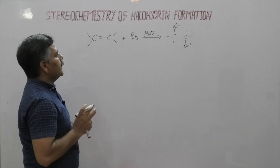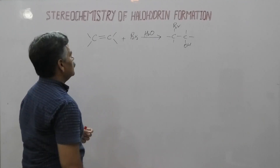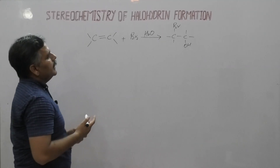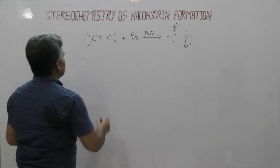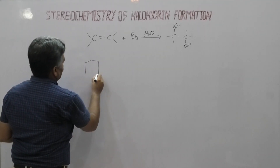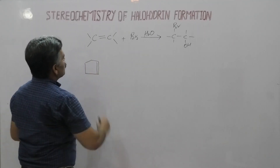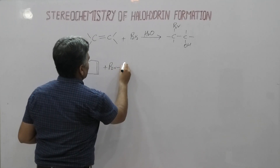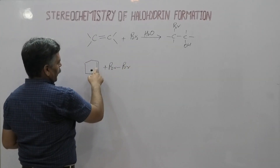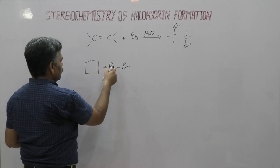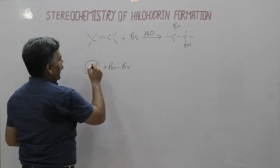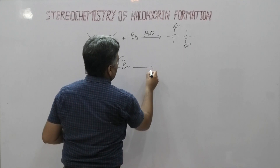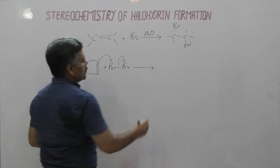Both these groups attach on opposite faces, and such types of reactions can be explained in the case of a cyclic system. For example, we have cyclopentene. When this cyclopentene reacts with bromine, the pi electrons attack the Br. This Br first attaches at the carbon-carbon double bond as an electrophile. So the first step in this reaction is the formation of the bromonium ion.